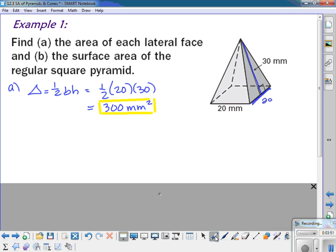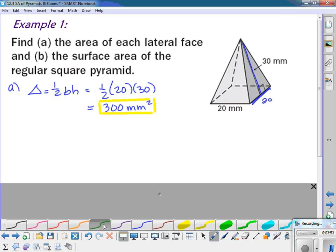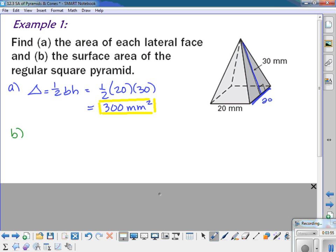Then if I want to find the total surface area, that means I've got the base plus the four triangles. So the base is a square, so it's 20 squared. And then 4 times the 300 that I found in the first part. So that gives us 400 plus 1,200. And so the total surface area would be 1,600 millimeters squared.